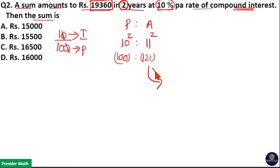If 1 unit is 160, that means here principle is 100 unit. Principle means sum. Sum is 100 units. So, 100 into 160 is 16,000. So, option D is your answer because principle here is 100 unit.